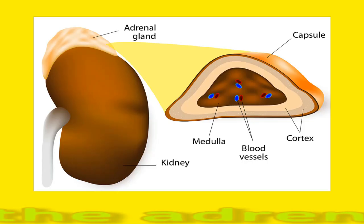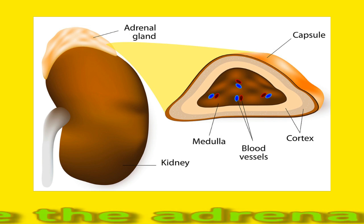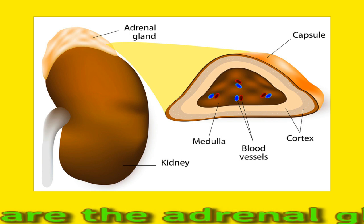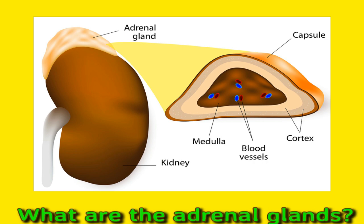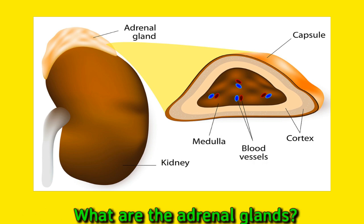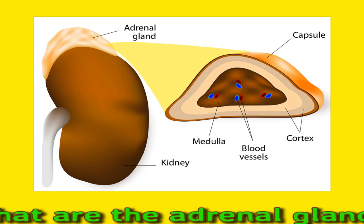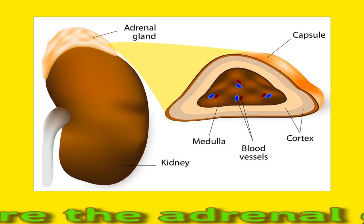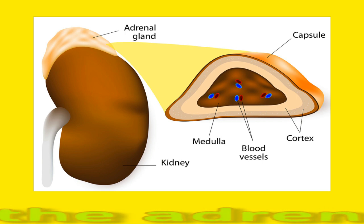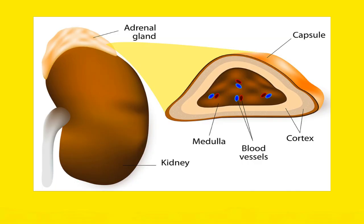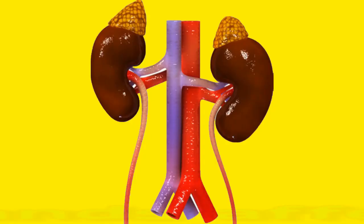What are the adrenal glands? A person's adrenal glands are small, triangle-shaped glands located at the tops of their kidneys. They form part of the endocrine system, producing hormones that regulate a person's metabolism, immune system, stress responses, blood pressure, and heart rate.